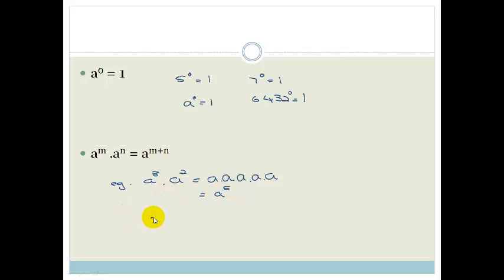So another example would be 2 to the 3, 2 to the 5. So you don't have to multiply that all out like that. All we can do is go, well, that is equal to 2 and 3 plus 5 is 8. And there you go.